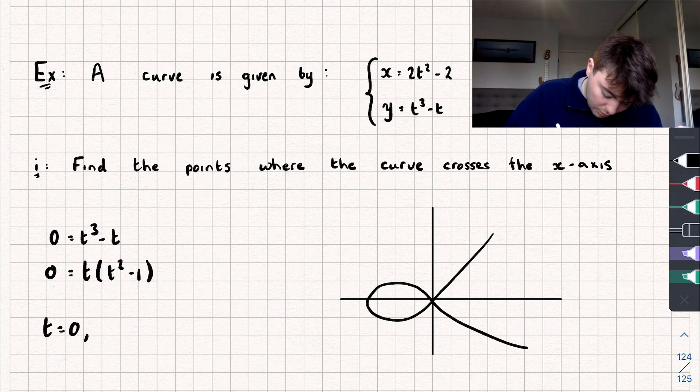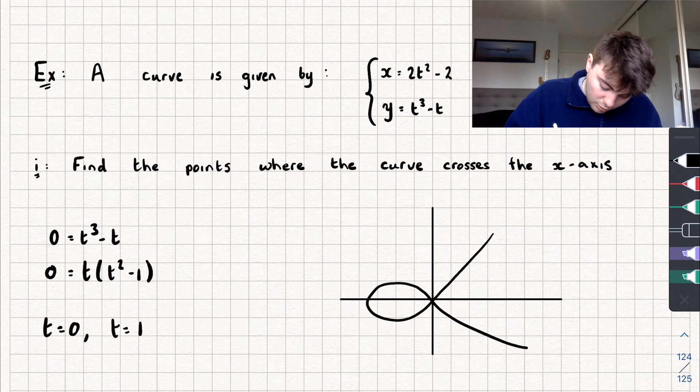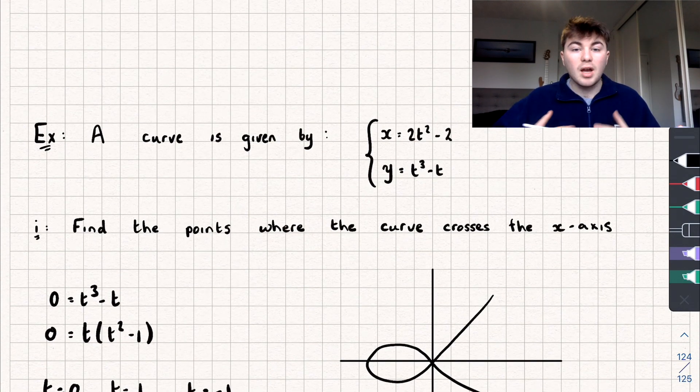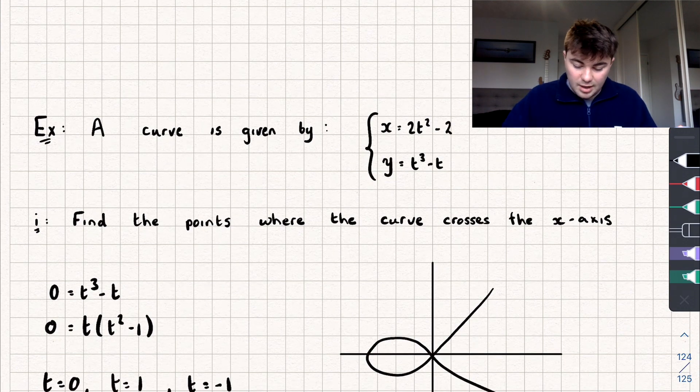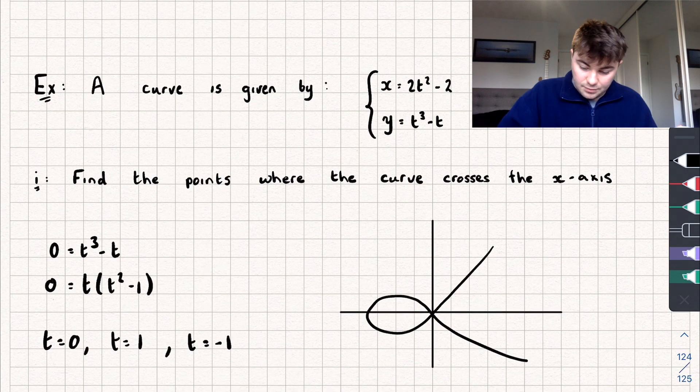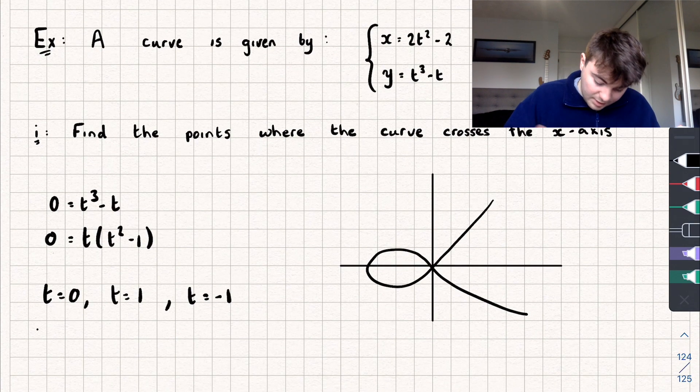So the solutions to this are going to be that t equals 0, t equals positive 1, or t equals negative 1. And now I'm going to substitute these values for my parameter into my equation for x. When t equals 0, x is going to be equal to negative 2.